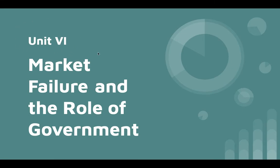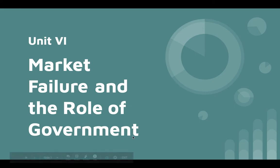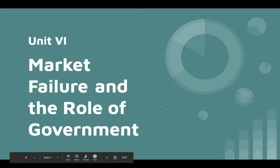Hey there, everyone. Mr. Lewis here, ready to kick off our sixth and final unit here in AP Micro — Market Failure and the Role of Government. This unit is all about analyzing the ways in which the government might respond through economic policy to some of the inefficiencies that are created in markets, as we saw in Units 4 and 5.